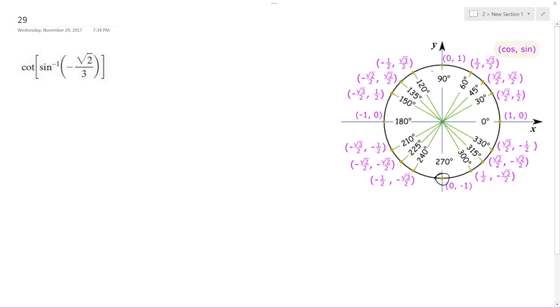Inverse sine is bounded between negative pi over 2 and pi over 2. So negative square root of 2 over 3 is going to be equal to negative square root of 2 and then 3.